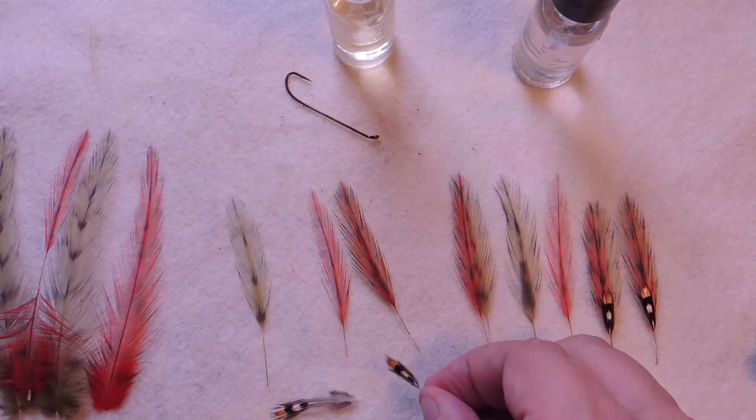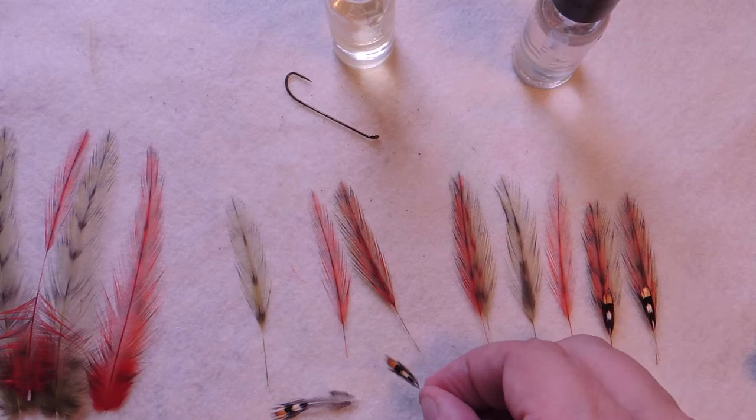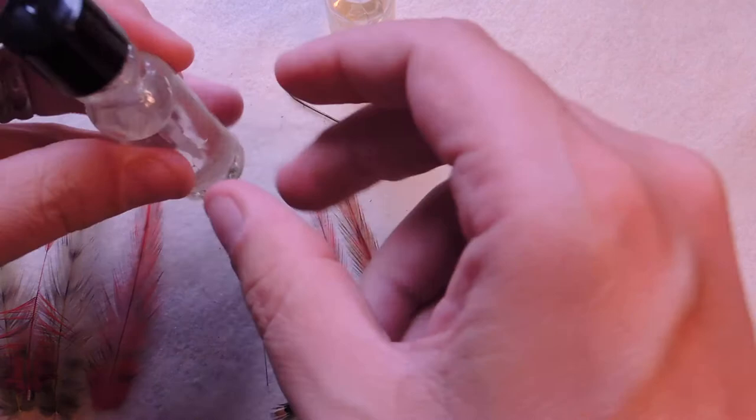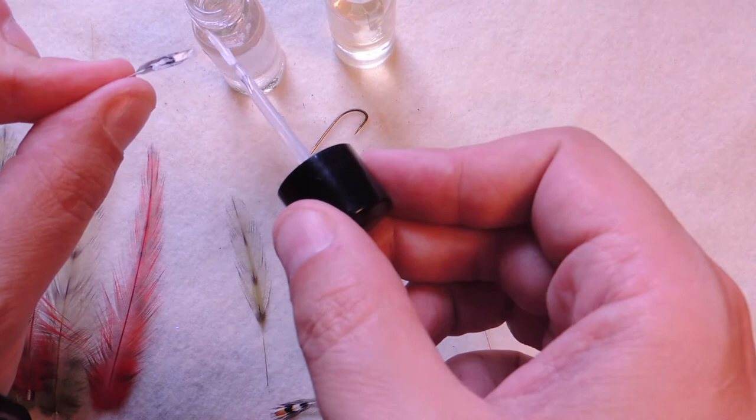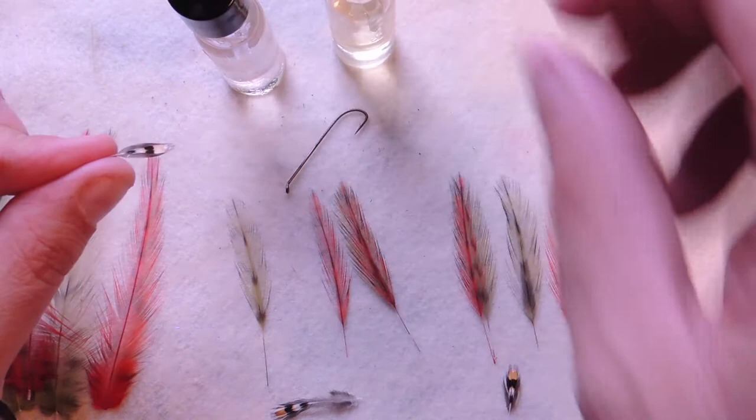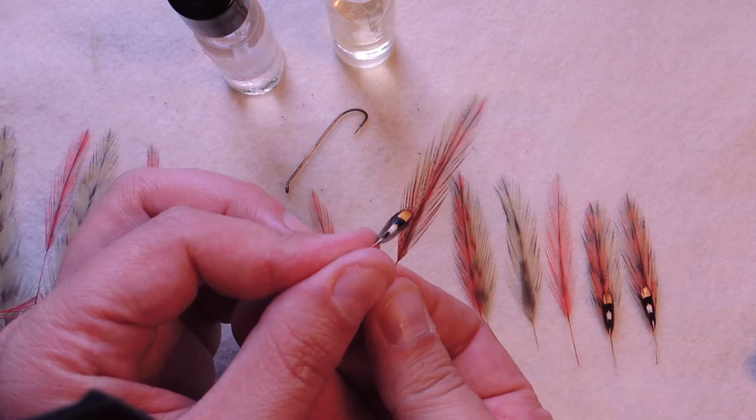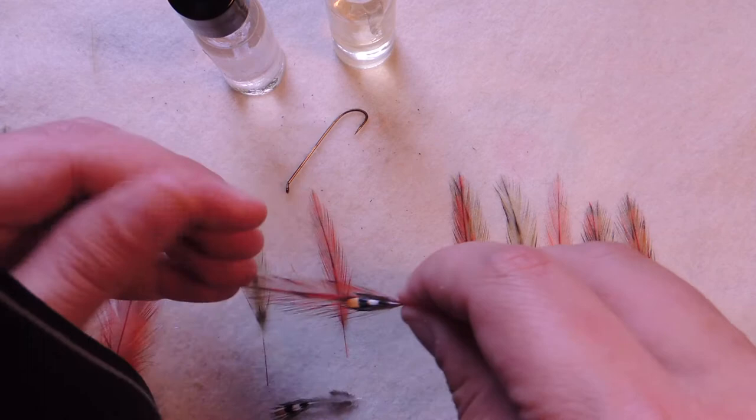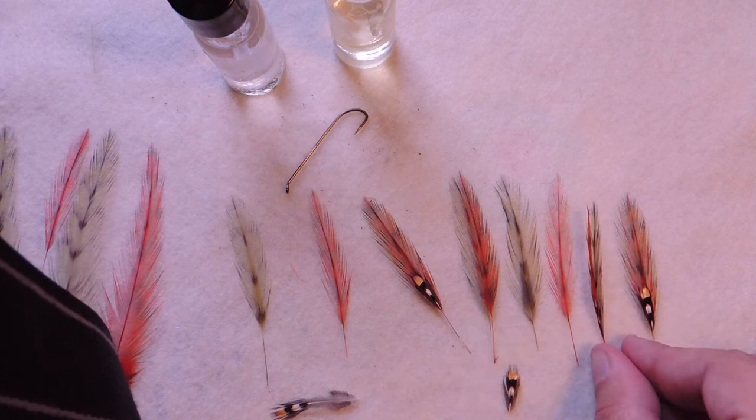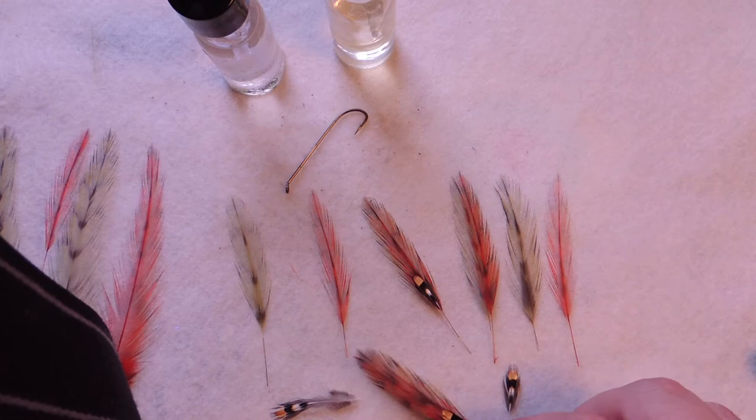Once we have those we'll take a piece of jungle cock. I just take some regular artist nails. I'll just coat the back fairly liberally. I just want to place that on the center.